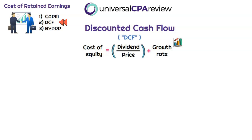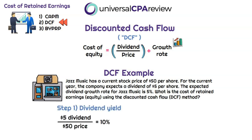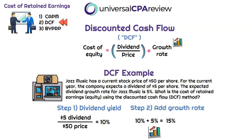Let's work through an example with Jazz Music. The current stock price is $50 per share, the expected dividend for the current year is $5 per share, and the expected dividend growth rate is 5%. Step one: calculate the dividend yield — $5 dividend divided by $50 stock price equals 10%. Step two: add the 5% dividend growth rate to get a cost of retained earnings of 15% using the DCF method. Just two simple steps.